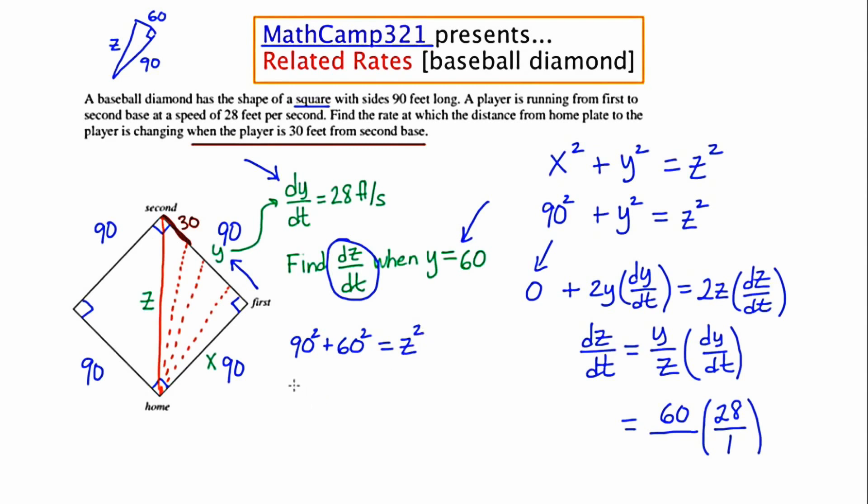90 squared is 8100. 60 squared is 3600. And the sum of those two numbers is going to be 11700. And z will be the square root of that number.